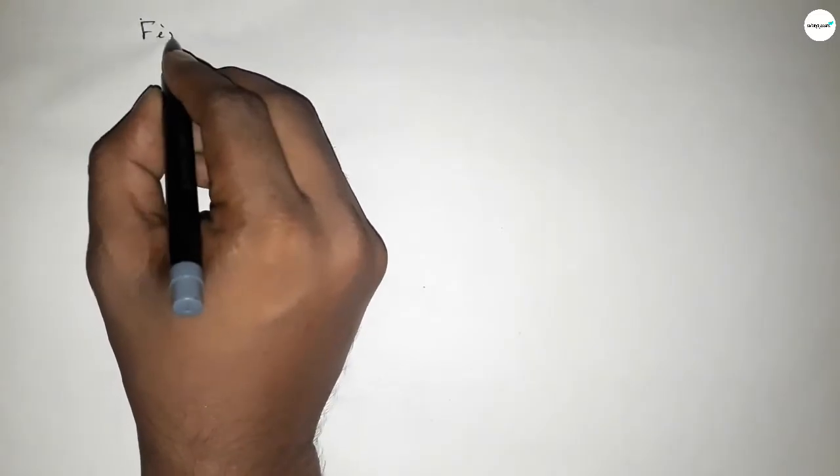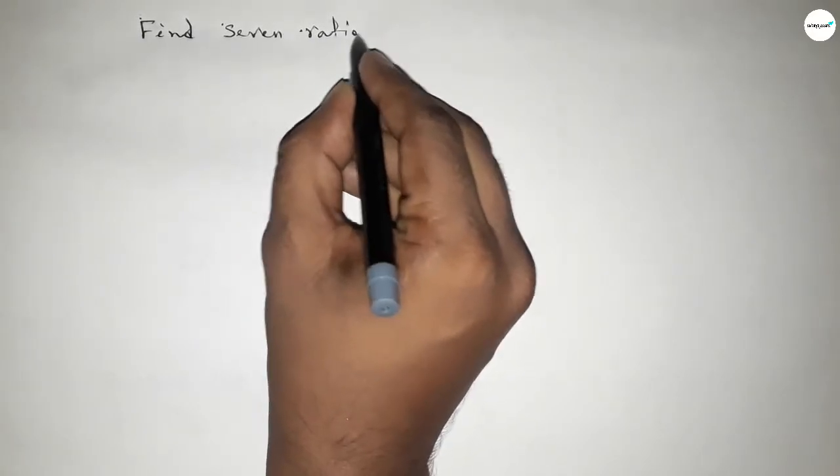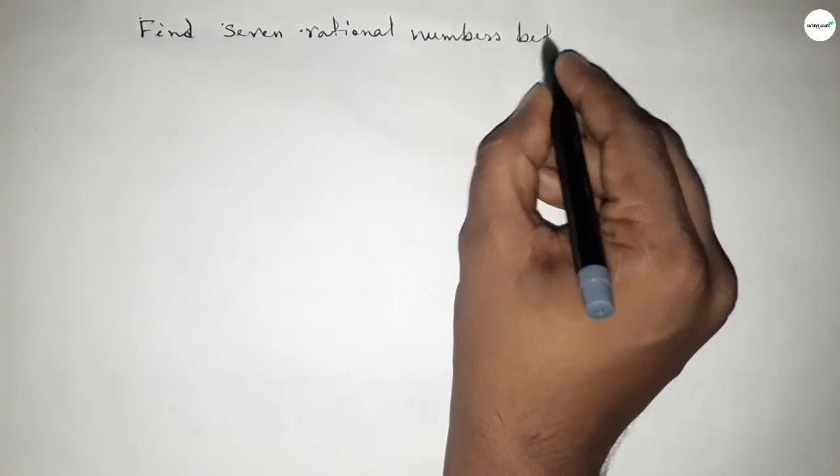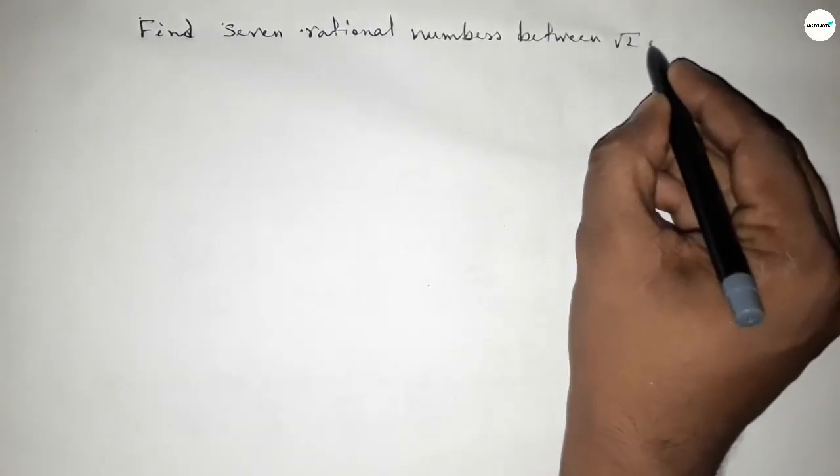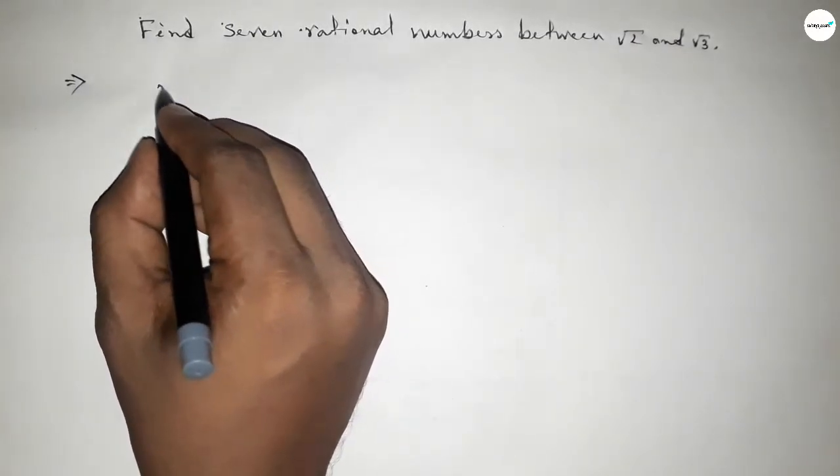Hi everyone, welcome to SSR Classes. Today in this video we have to find seven rational numbers between √2 and √3. So let's start the video. First of all, write down here the value of √2.